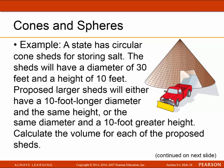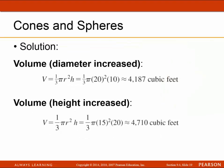A state has circular cone sheds for storing salt. The sheds have a diameter of 30 feet and a height of 10 feet. Proposed larger sheds will either have a 10-foot longer diameter with the same height, or the same diameter with a 10-foot greater height. When the diameter is increased, the volume is 4,187 cubic feet. When the height is increased, the volume is 4,710 cubic feet.